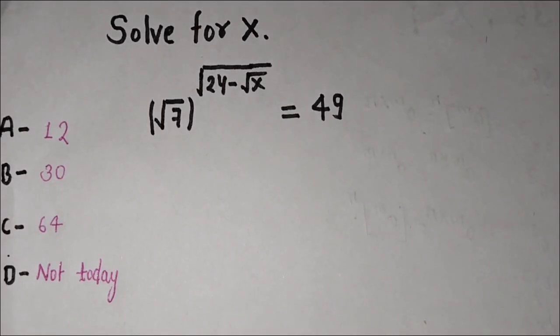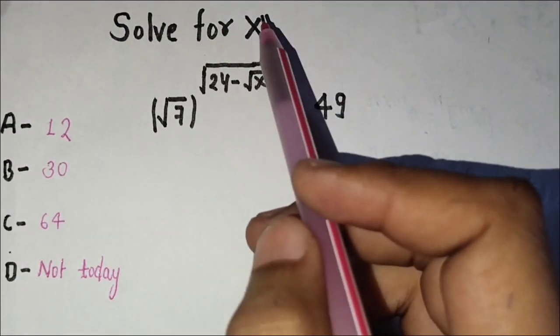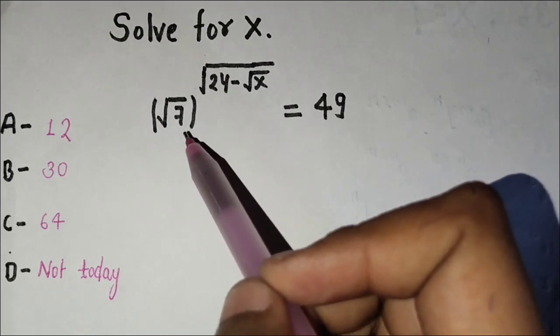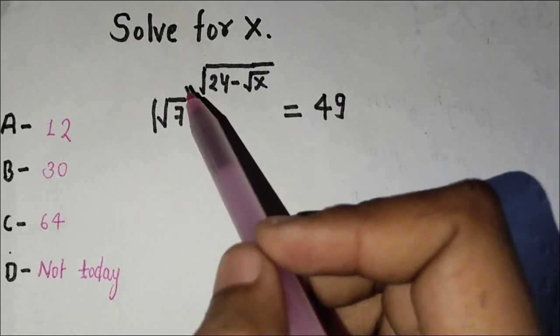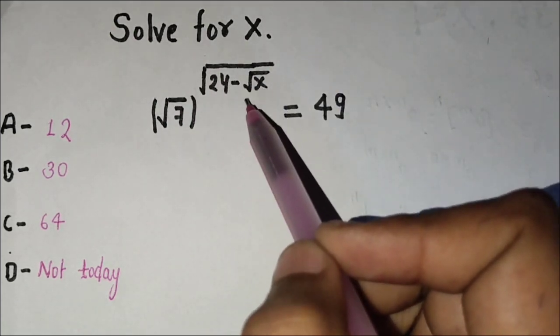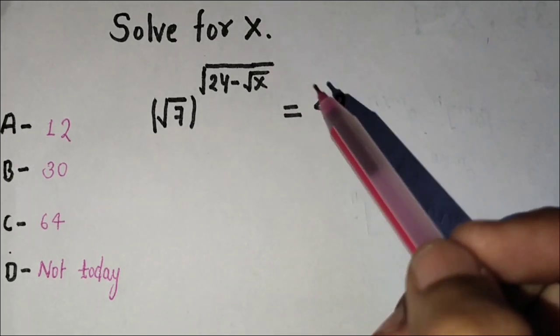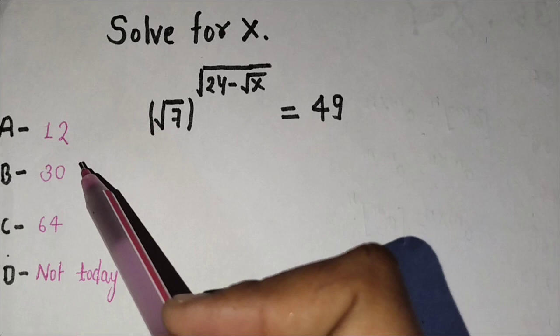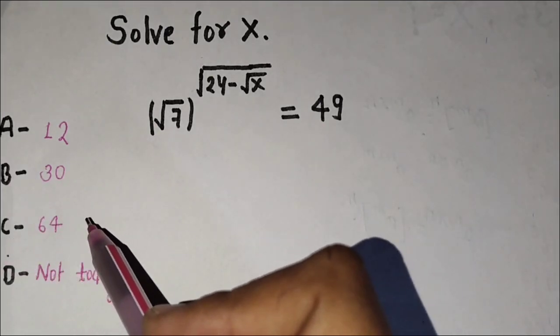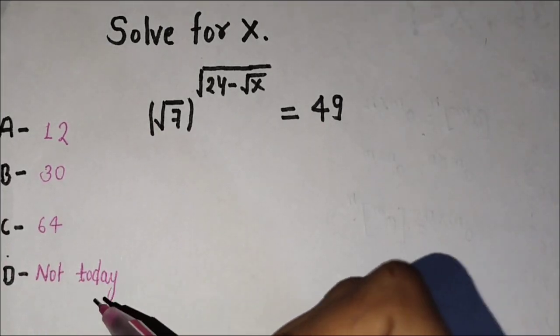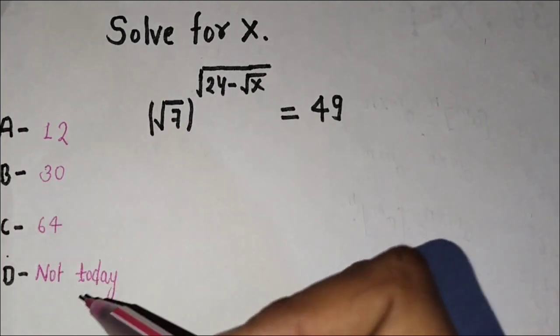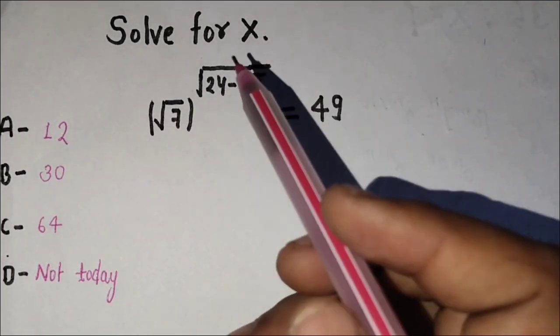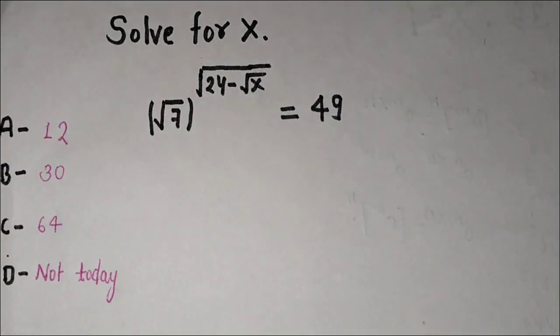Hello students, today I have this question: solve for x. Root 7 to the power of root 24 minus root x equals 49. The options are: A - 12, B - 30, C - 64, D - Not today. Let's start solving this question.